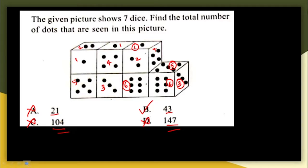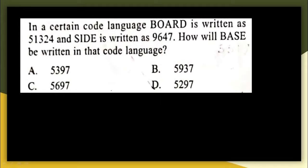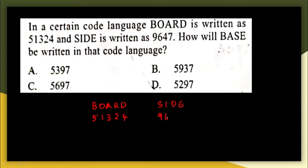Next question: in a certain code language, BOARD is written as 5 1 3 2 4, and SIDE is written as 9 6 4 7. How will BASE be written in that code language? Writing the code just below the word given helps us arrive at the answer.